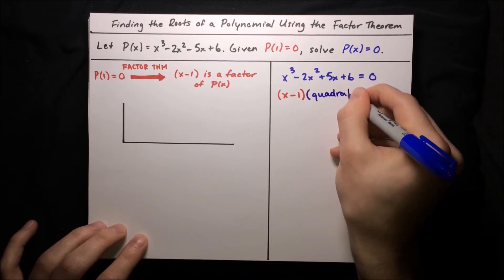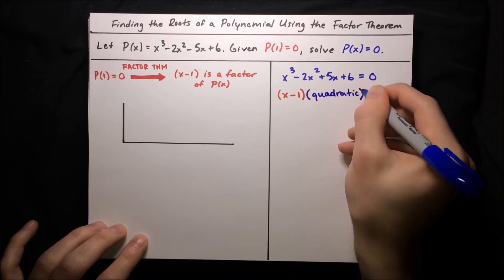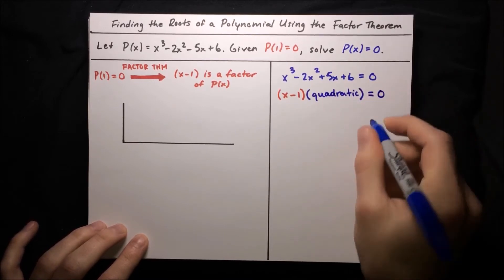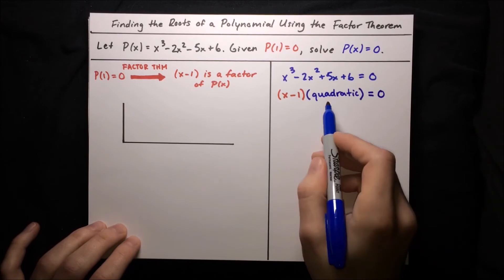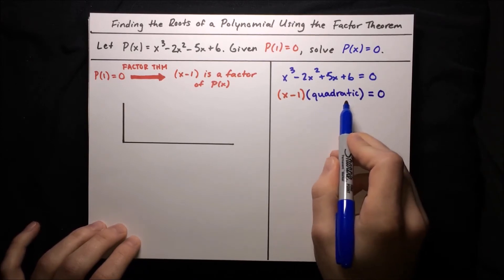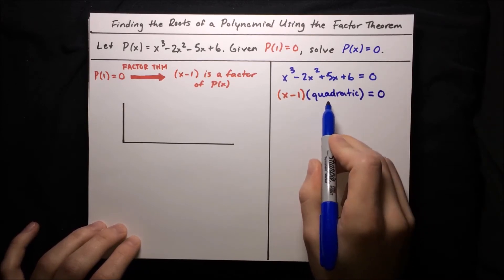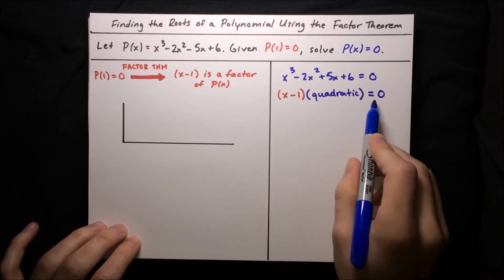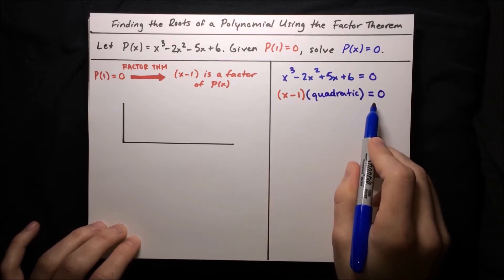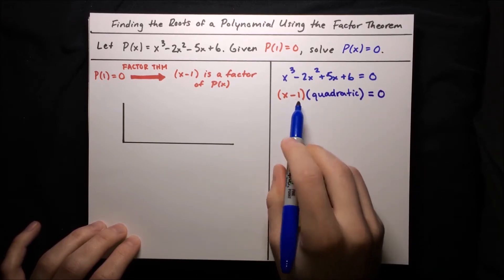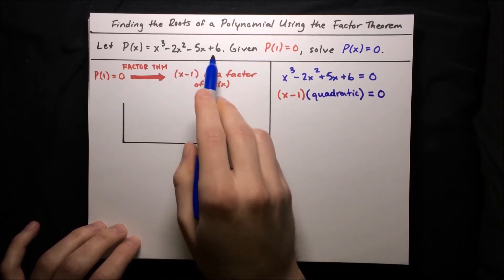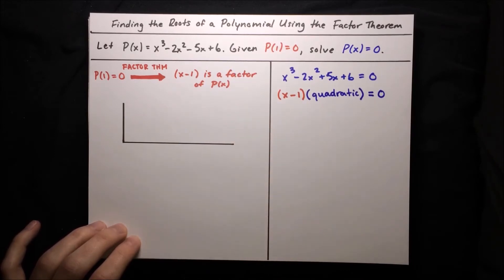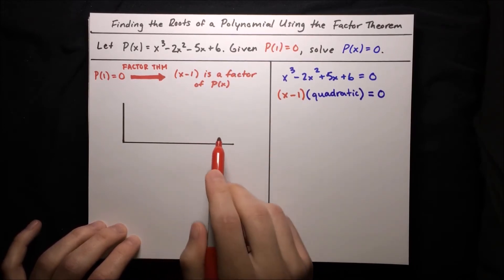Quadratics are pretty easy to factor. But first of all, what is the quadratic here that multiplies x minus 1? In order to find that, we can just divide our polynomial by the factor x minus 1, and we can use synthetic division to do that.